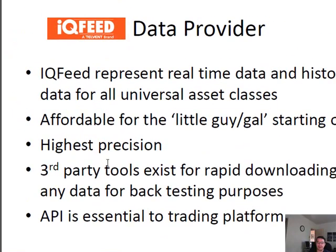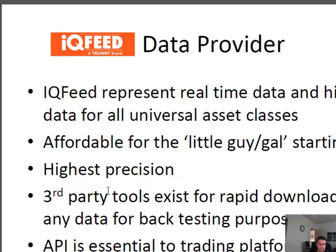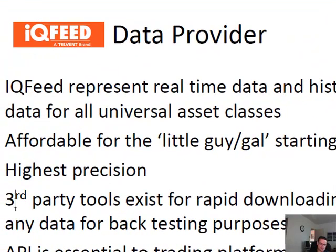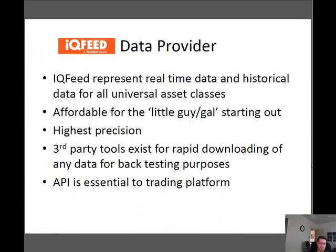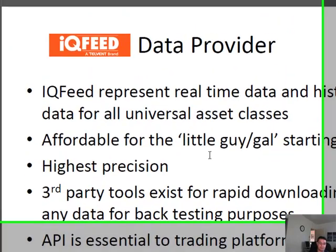Now let's talk about our data provider. I've always used DTN IQ Feed. I've been using them for about two years and they're really, really good — you get real-time data, historical data, and coverage for pretty well all the major asset classes. For a little guy or gal starting out, it's very affordable. They just released a new version with very high precision. I've also identified some powerful third-party tools for my members for rapid downloading of data for backtesting purposes — you're going to save yourself thousands of dollars. I also use the IQ Feed API, which is an essential requirement for the platform I've developed.